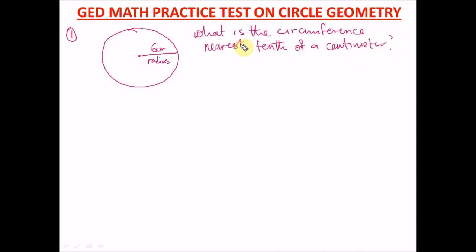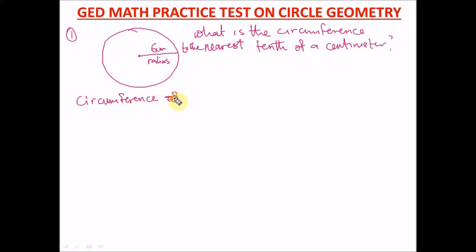To find the circumference of a circle, the formula is: Circumference = π × d, where π is given on your formula sheet as 3.14, and d is the diameter. The diameter is a full line that crosses from one point on the circumference, through the center, to another point on the circumference.